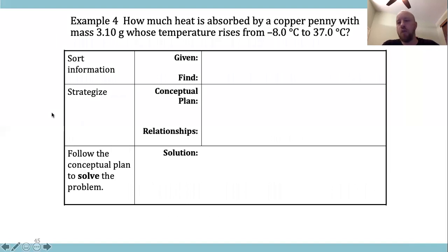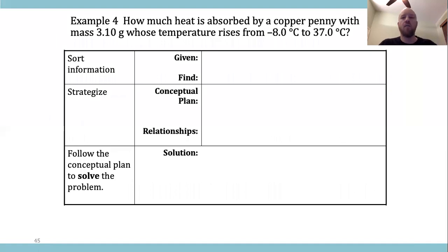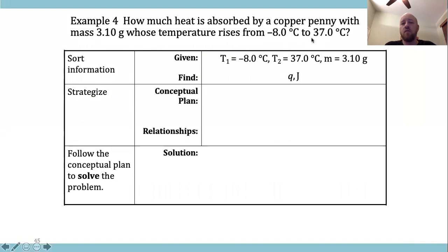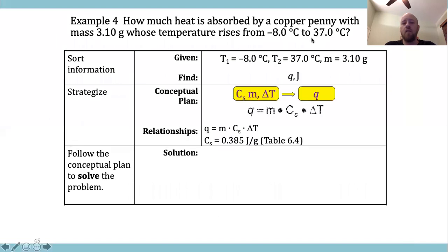These specific heat problems are pretty straightforward — a lot of times they are plug-and-chug. For example: how much heat is absorbed by a copper penny whose mass is 3 grams if it raises from negative 8 to 37 degrees Celsius? The change in temperature final minus initial is 37 minus (−8), so ΔT equals 45 degrees Celsius.